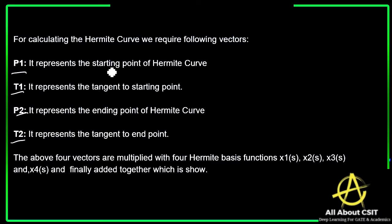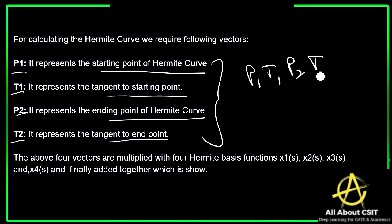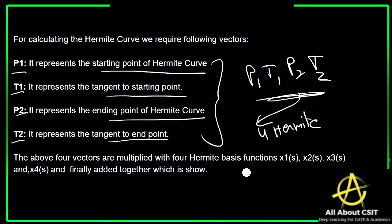P1 represents the starting point of the Hermite curve and T1 represents the tangent at that starting point. P2 represents the end point and T2 represents the tangent at that end point. These four vectors P1, T1, P2, T2 are multiplied with four Hermite basis functions — x1(s), x2(s), x3(s), and x4(s) — and finally added together.